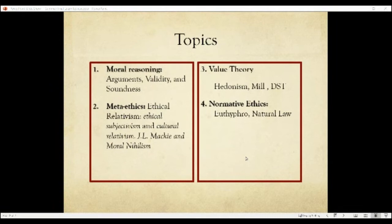Next we move to value theory. We talked about hedonism and desire satisfaction theory and why those theories try but fail on a number of different issues. You should know not just those, but all the theories we've covered so far — what are the problems with those theories? Why don't they work? Where do they fail in providing good moral guidance? We talked about John Stuart Mill and his defense of hedonism, and there may be questions about that.